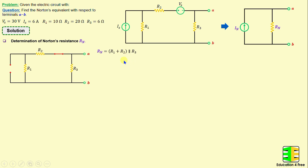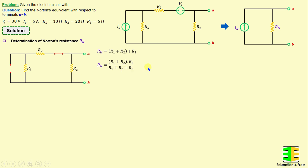R1 and R2 in series are connected in parallel with R3. Therefore RN can be calculated using the formula: (R1 + R2) × R3 / (R1 + R2 + R3). Replacing the resistors with their numerical values, we obtain RN equal to 5 ohms.